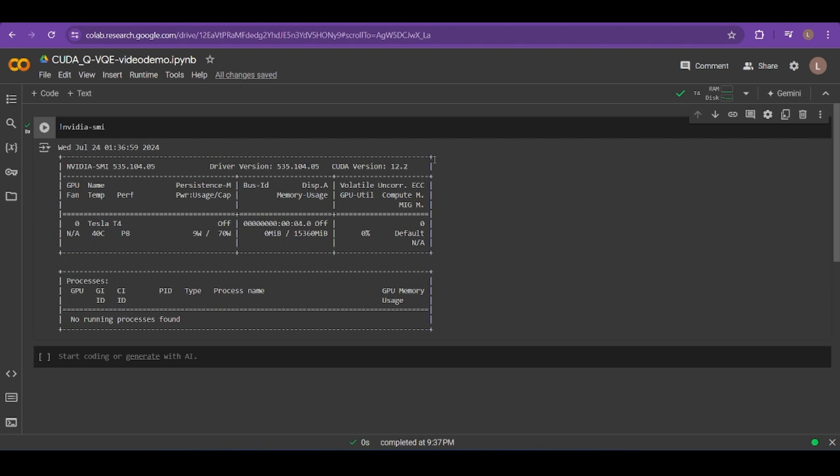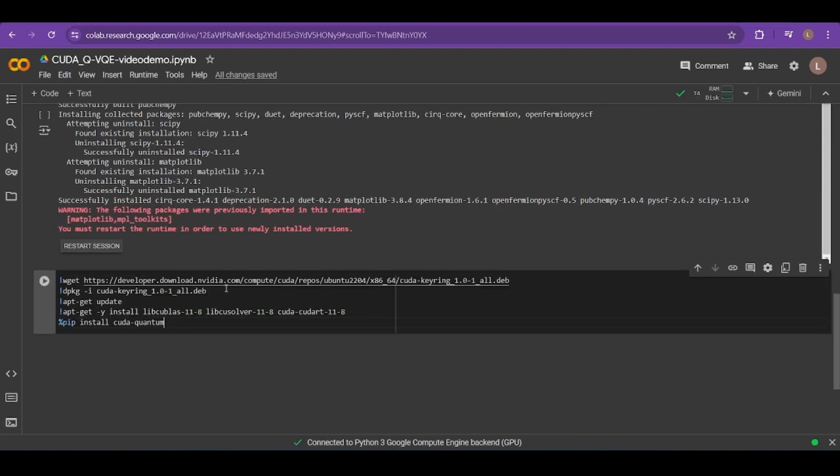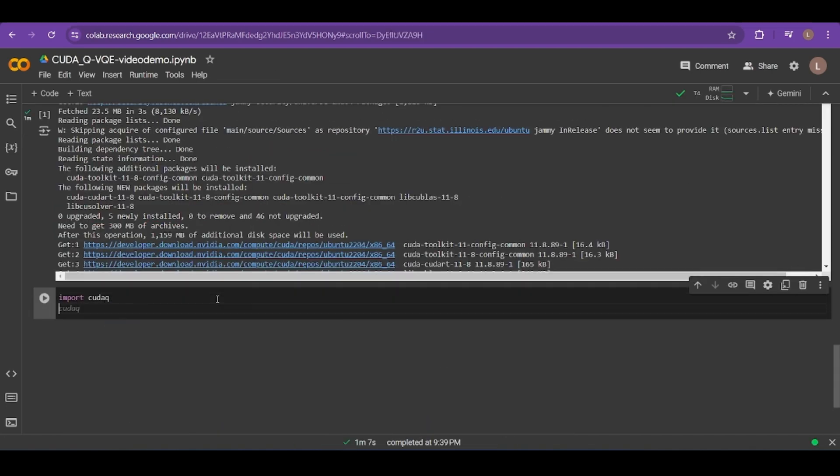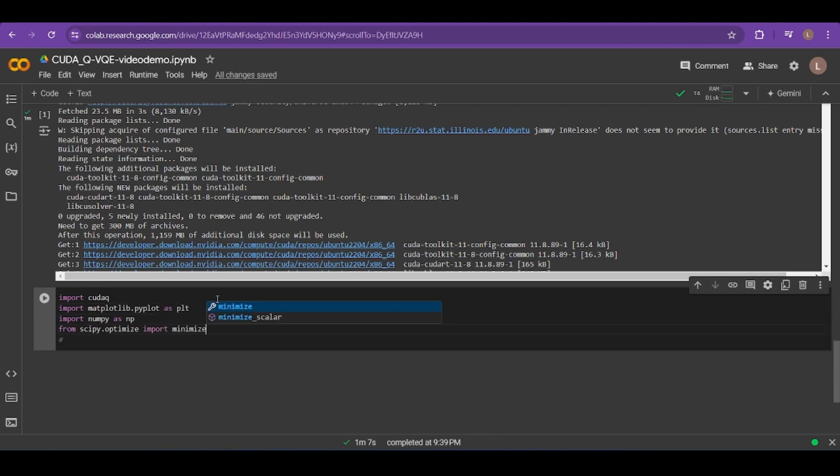To start off with CUDAQ, we'll need to install the necessary scientific Python libraries. Once they're installed, we can install CUDAQ. Now, with those libraries installed, you'll want to import CUDAQ, pyplot, scipy.optimize, and numpy. We can set the CUDAQ target to NVIDIA so that it knows that we're using an NVIDIA GPU to run the simulation.